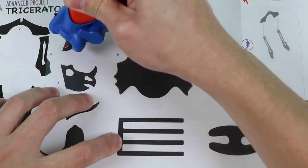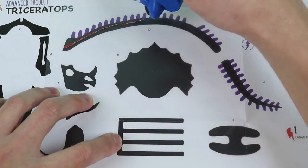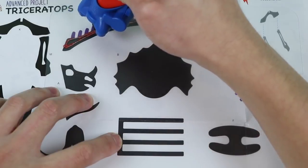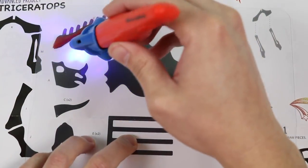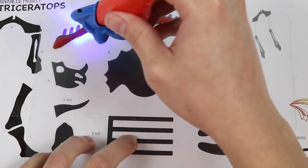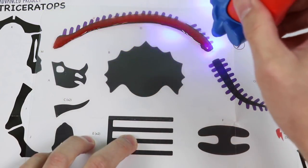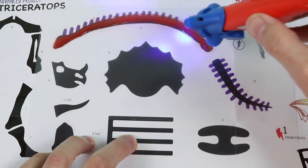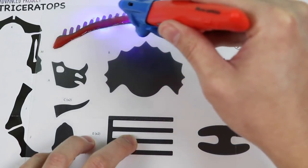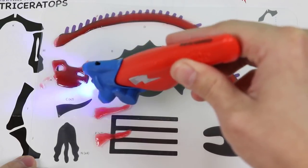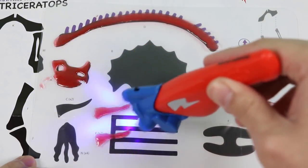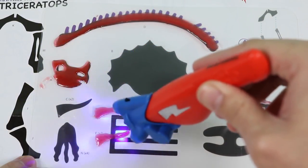This time I'll use the red gel to make the spine and tail. Light it up! Okay, I went ahead and made the other part of the tail, along with the Triceratops' head and horns. So let me light all of this up one more time.